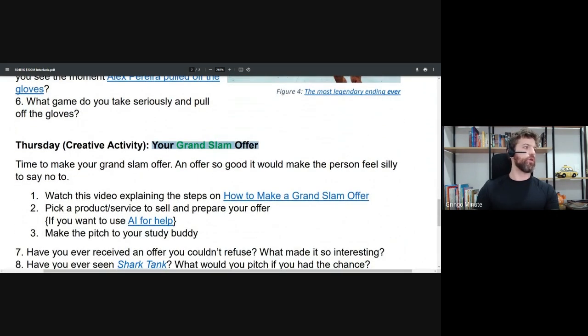And your Grand Slam offer - a vocab word. Grand Slam is a baseball term for when you have one player on each base and you hit a home run, so you get four points. It's the best hit possible in baseball. So in American culture specifically, you'll hear the word Grand Slam used to say the best possible of something.